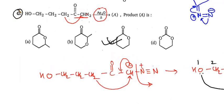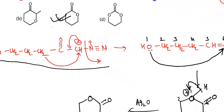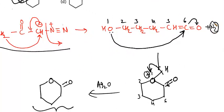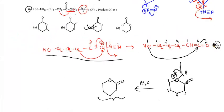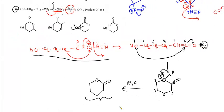So in the G reaction, first the Wolff rearrangement occurred on this alpha diazoketone — nitrogen N₂ left (it's an interval bond, we can skip it as it's a side product) — then the product formed, and then an intramolecular reaction occurred. Intramolecular reaction happens when within one compound there is both a nucleophile and an electrophile. This can also be called NGP — neighboring group participation. Thank you.